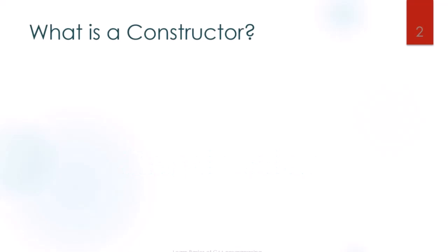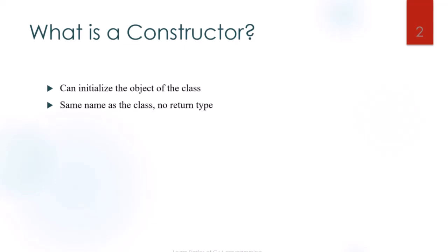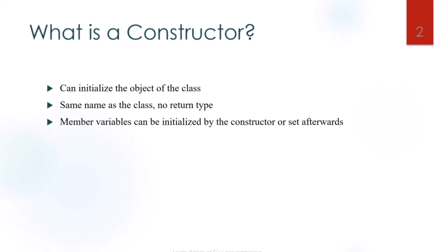What is a constructor? It is a special member function which can initialize the object of the class. It is special because it has the same name as the class and no return type — not even void. Member variables can be initialized by the constructor or they can be set afterwards. The constructor gets invoked when the object of the class is being created.